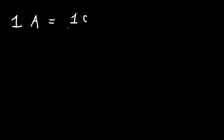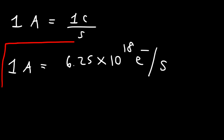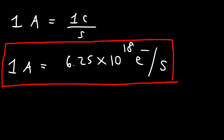This helps us relate the unit of current to electrons. We said that one amp of current represents one coulomb of charge flowing per second. We could also say that one amp of current represents the flow of 6.25 times 10 to the 18 electrons flowing in a circuit per second. So an amp, or the unit of current, tells you how many electrons are flowing per unit time.